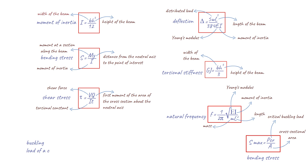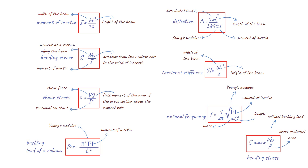Next, we have the formula for the buckling load of a column, represented by the equation where E is the Young's modulus of the material, I is the moment of inertia of the cross-sectional area of the column, and L is the length of the column. This formula calculates the critical buckling load P_cr, which is the maximum load a column can withstand before it collapses due to buckling. It is based on the Euler-Bernoulli beam theory, which assumes the column is subjected to an axial compressive load and the cross-section remains plain and straight during bending. The value of P_cr depends on the material properties, the size and shape of the cross-section, and the length of the column.